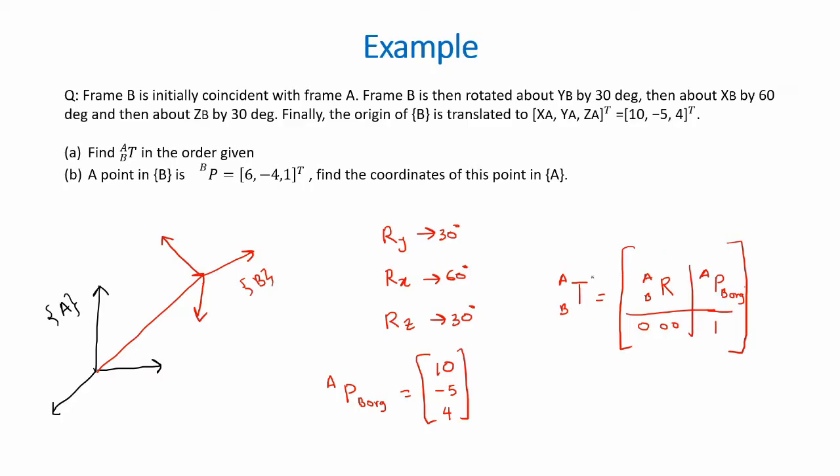Right. So the first step in calculating the transformation matrix is to calculate the rotation matrix then substitute in the position vector and finally find the transformation matrix. So let's see how this is done.